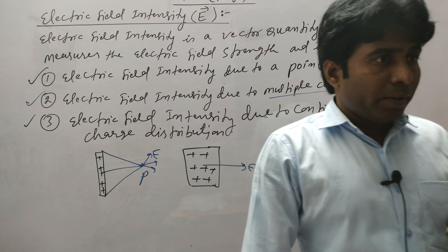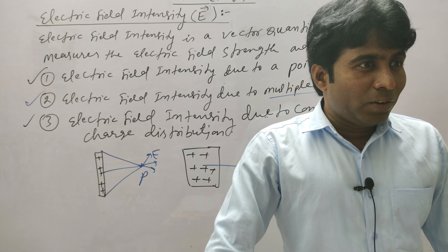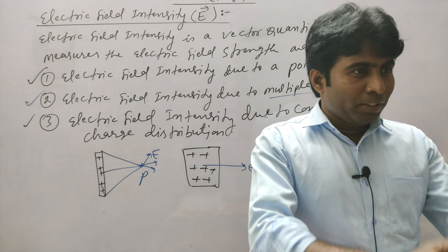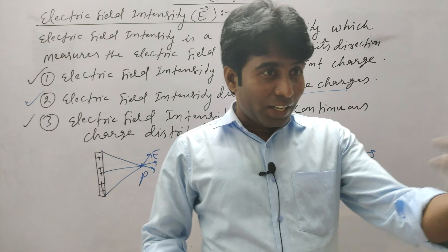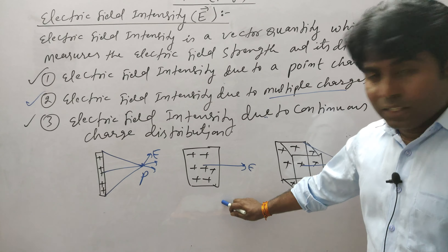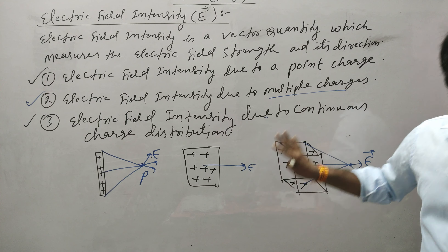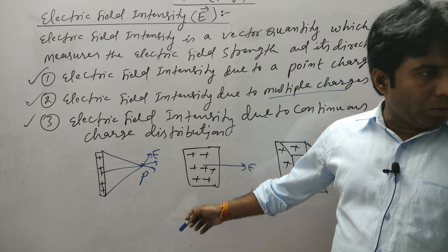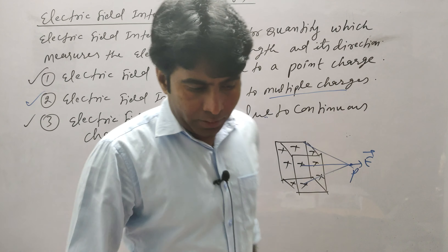If the repulsion is very less, then the electric field intensity is low. For example, if I push you versus a bodybuilder like Khali pushes you — there will be a difference. When Khali pushes you, the intensity is high because he pushes with great force. Similarly, if the source charge is very large, it will repel the test charge very strongly; if the source charge is weak, it will repel weakly.